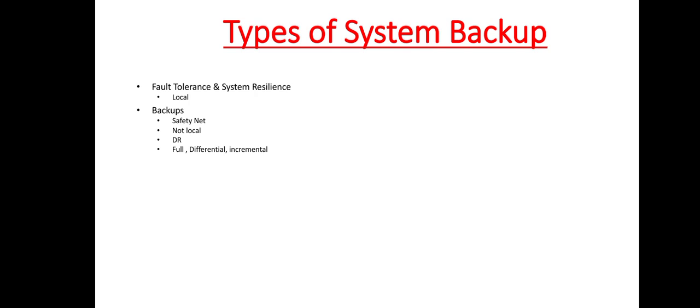So you can take three types of backups of a primary system: the full backup, differential backup, and incremental backup. Normally we use the full backup of a primary system in combination with the differential backup or incremental backup.